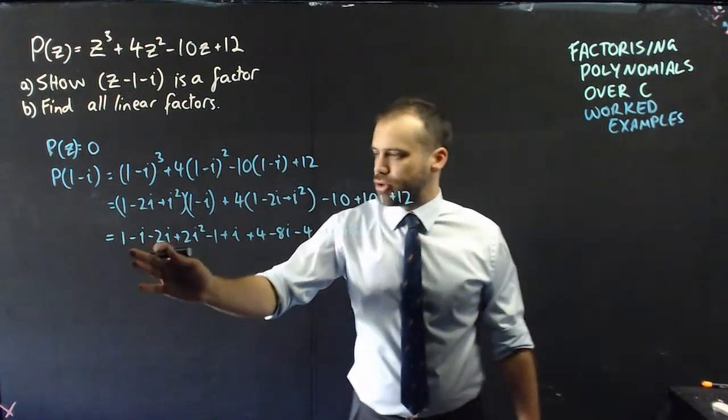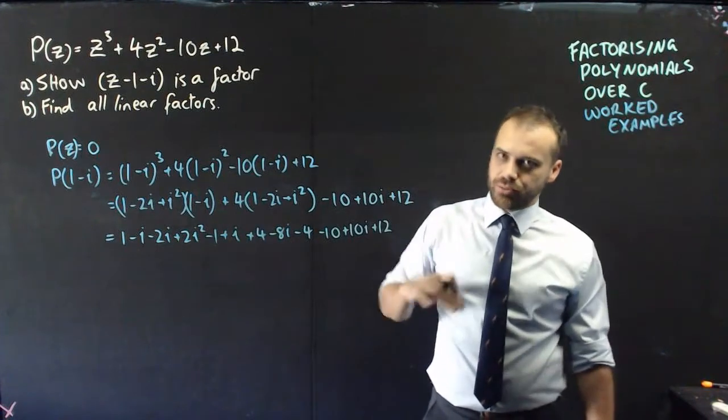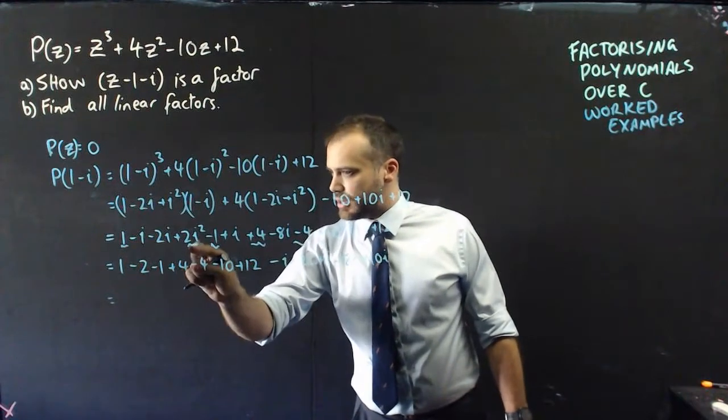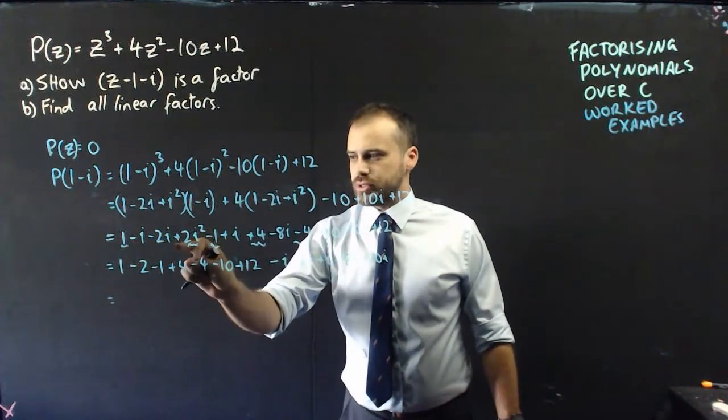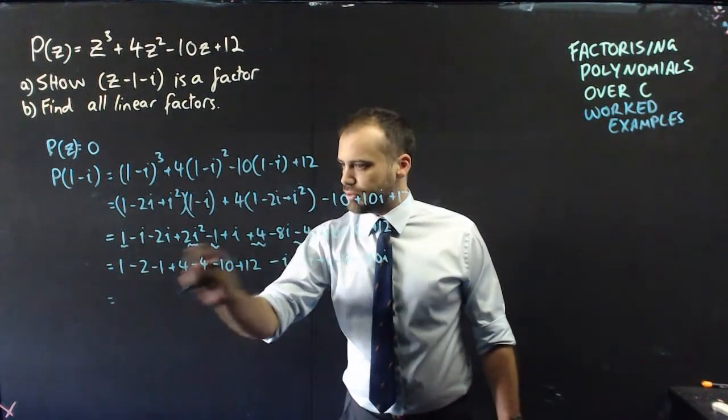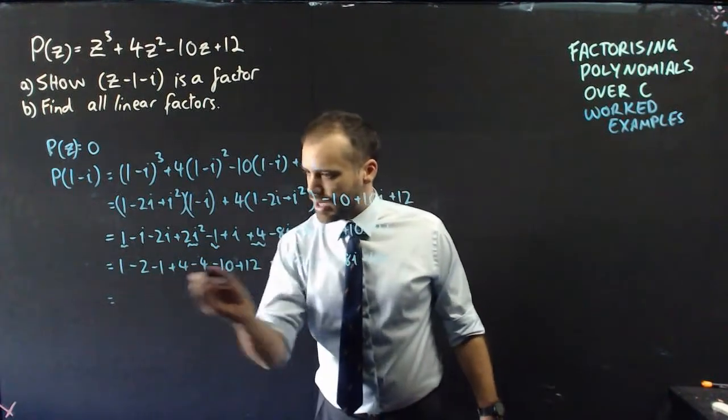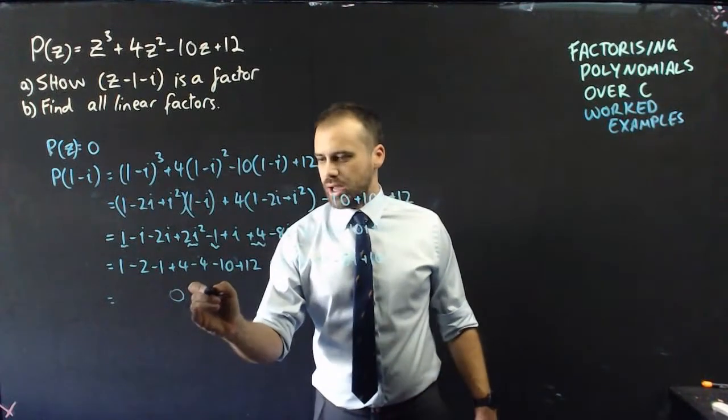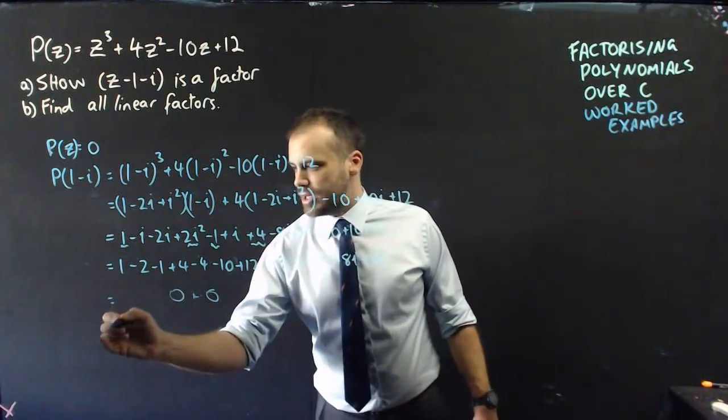Alright, so I'm going to group all my real components and all my imaginary components, and hopefully we get a 0 here. Alright, I think we're here. Now, these are my real components. That is a real component because it's positive 2 times negative 1, which is negative 2. And so I've put all my real components there, and when you add them all up, you'll get 0. I've put all my imaginary components there, and when you add them up, you'll get 0 equals 0.